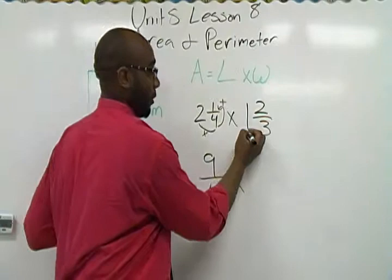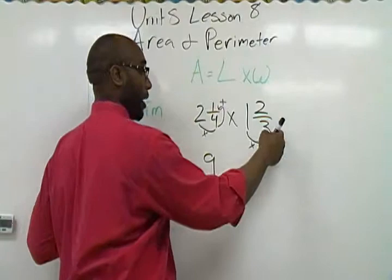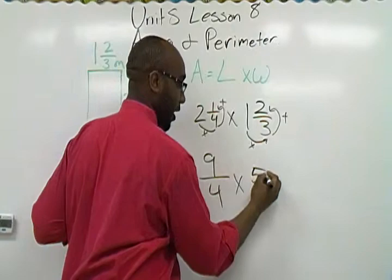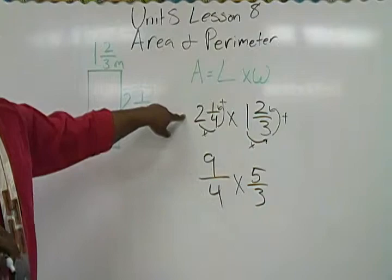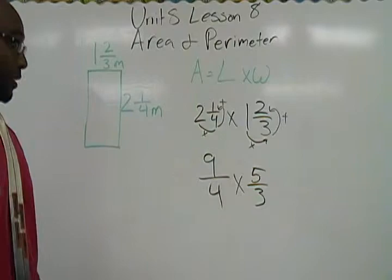Same thing over here. We're going to do our whole number, which is one times three. That gives us three. Three plus two gives us five. So it's now five-thirds. So the first step is to make sure you change these into mixed numbers, those mixed numbers into improper fractions.